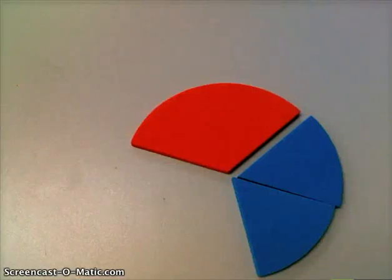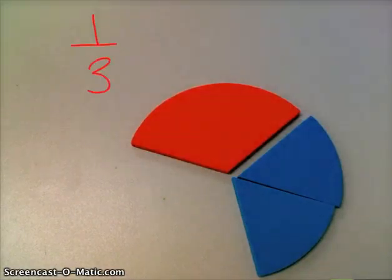Okay, so here we have, we're adding one-third, which is the orange, and then we're adding two-sixths, which is the blue. So we're adding one-third plus two-sixths.